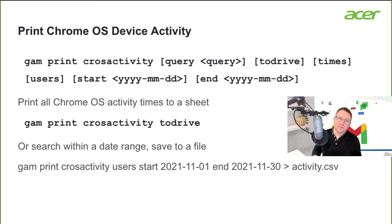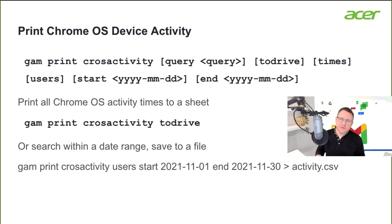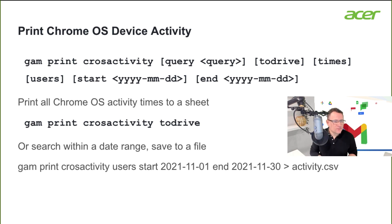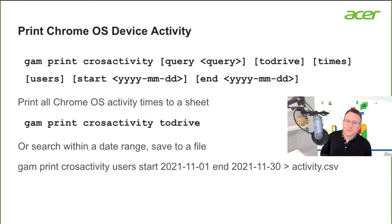That's a really quick demo of what you can do with GAM around Chrome OS reporting — looking at Chrome OS devices and user activity. Hope you found that useful. I'm Charlie Love, and thanks for watching this video from Apps Events.